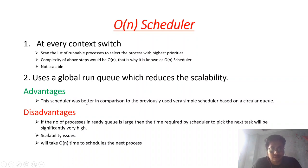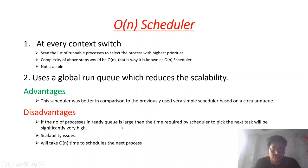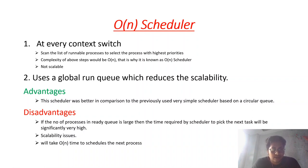The O(n) scheduler was better compared to previously used very simple schedulers, so it has some advantages. However, it is not good to use nowadays because it is not scalable. If the number of processes in the ready queue is large, the time required by the scheduler to pick the next task will be significantly high. As n increases, the time required also increases — it takes O(n) time to schedule the next process.